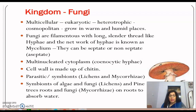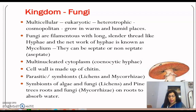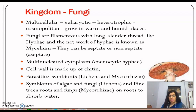The cell wall of fungi is made up of chitin. This is a very important factor when we talk about why the two-kingdom classification failed. The fungus and plants were placed in one group, but the cell wall of plants is made up of cellulose while the fungal cell wall is made up of chitin. This is a key and favorite exam question.